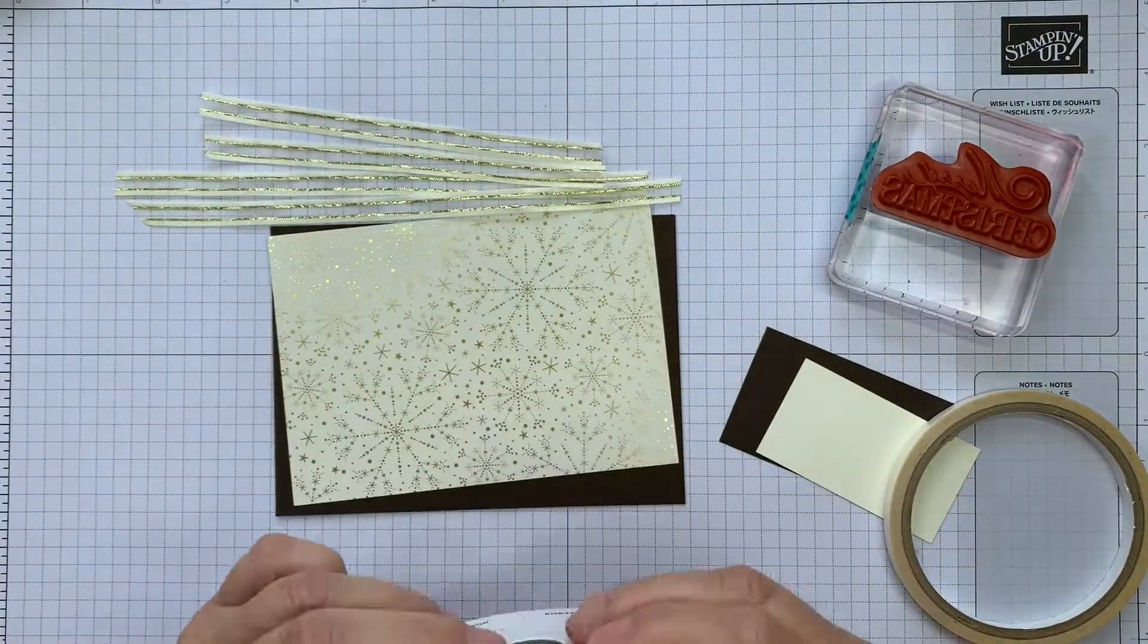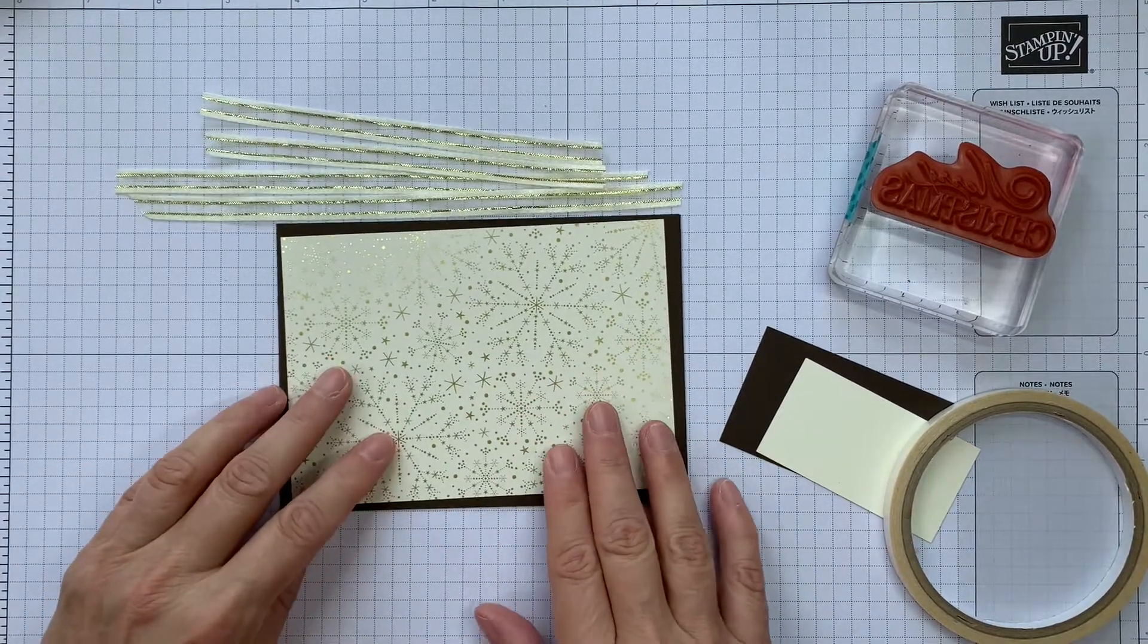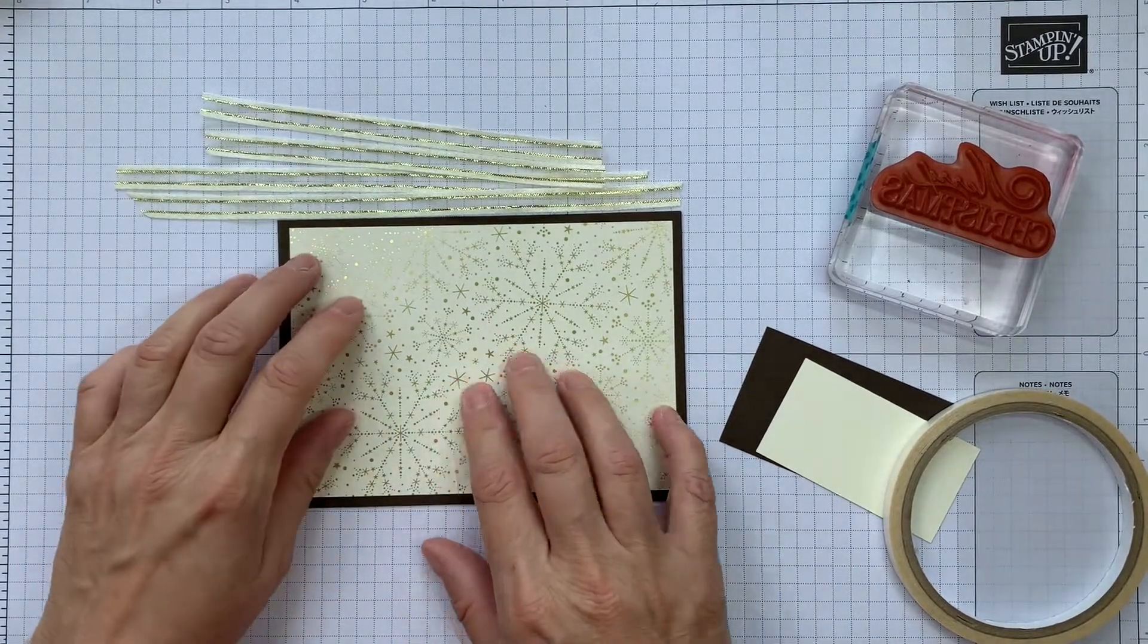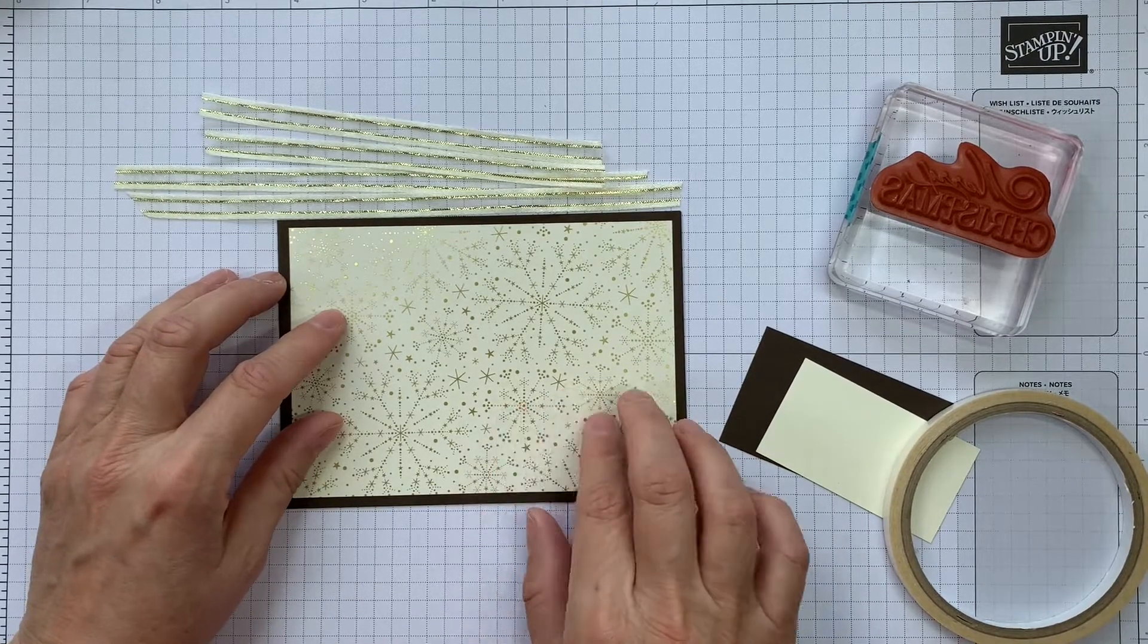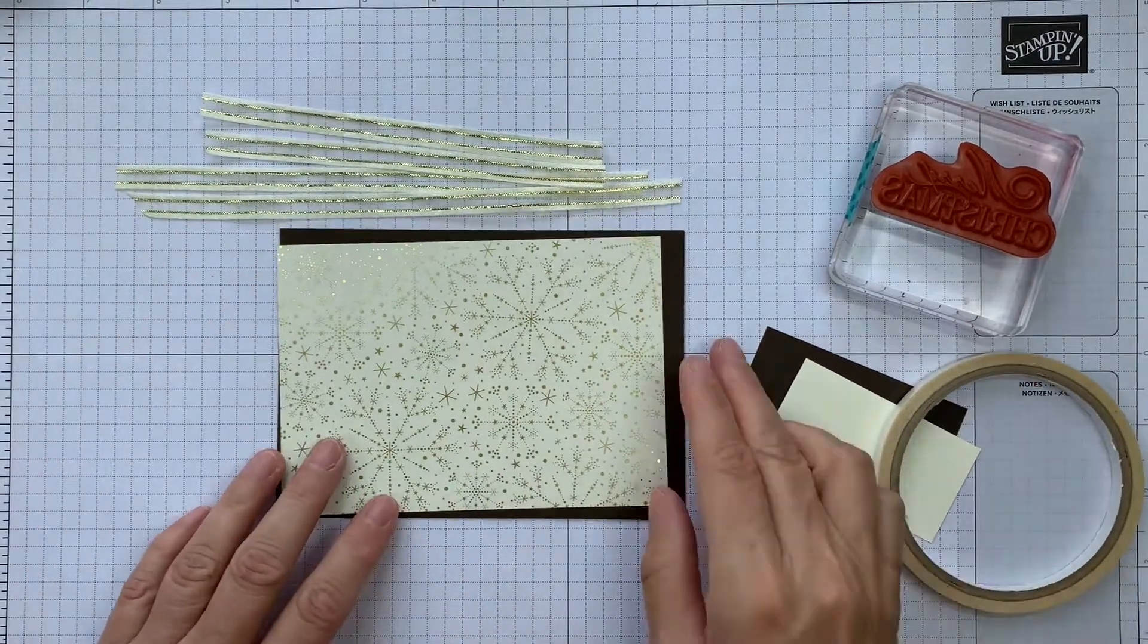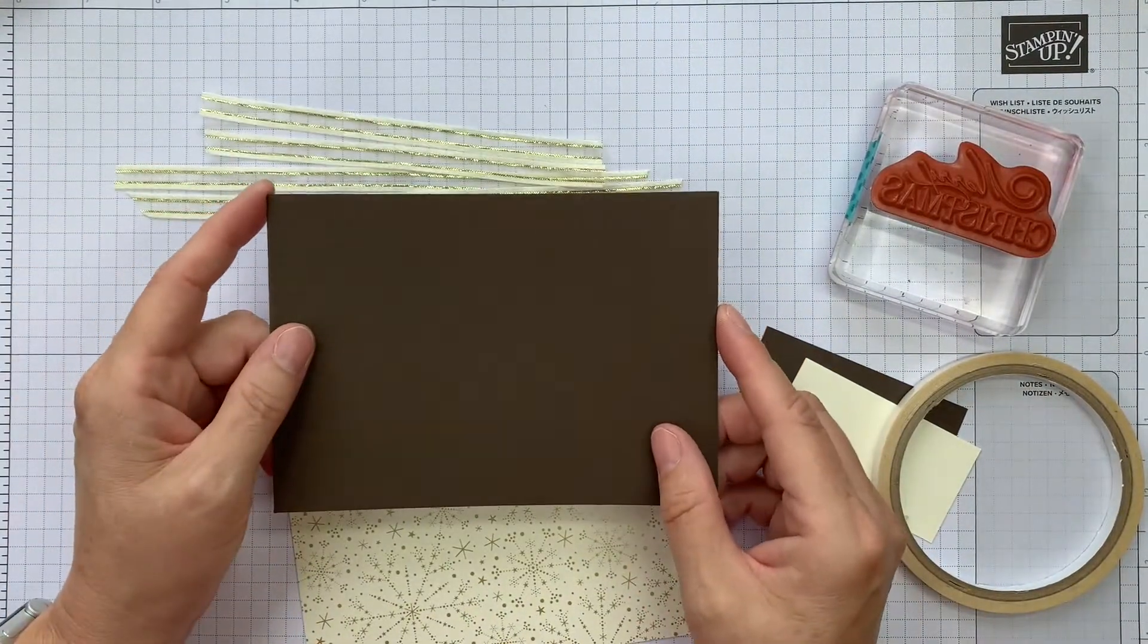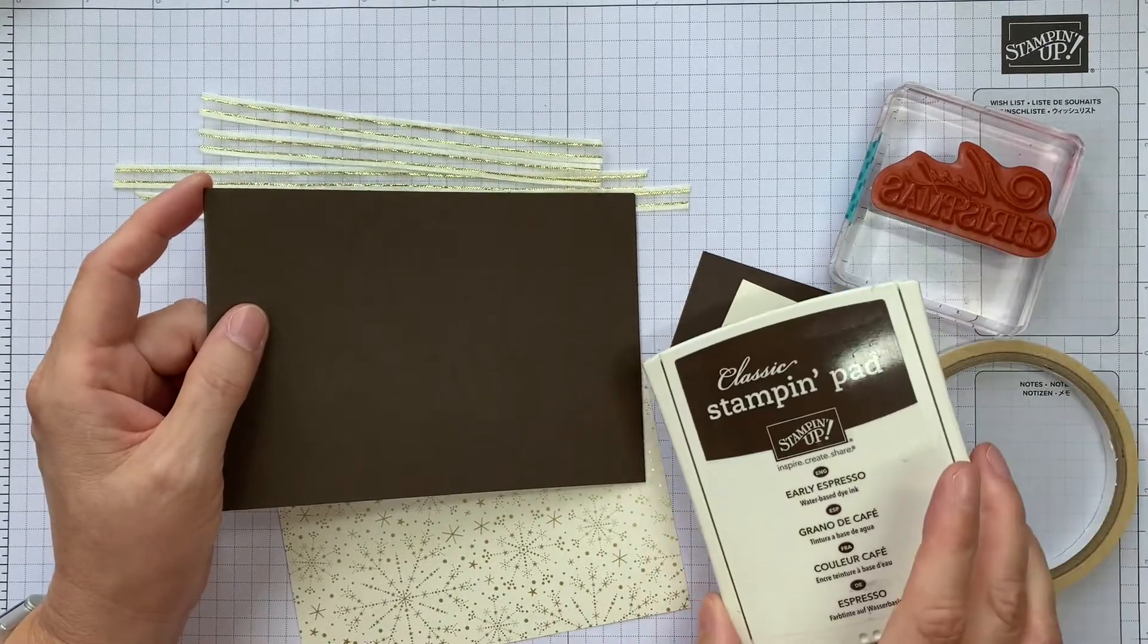This is a great ribbon to be able to use for all sorts of projects, in particular Christmas. It works very well for Christmas and I'm using it today with our Lights Aglow DSP. So this I featured last week and I'm still using it here today. For my card base, I've gone with Early Espresso and I'm using Early Espresso for the ink as well.